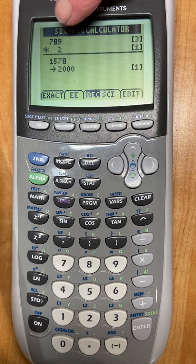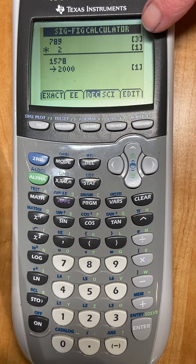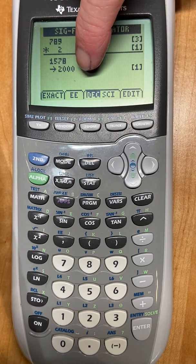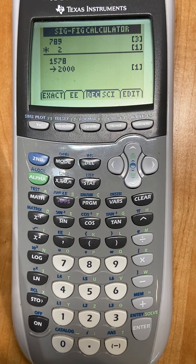Well, this has 3 SIG-FIGs, this has 1, that means you must go with the lowest number of SIG-FIGs. Here's the real answer, or the full answer, but I can only have 1 SIG-FIG so it is rounded to 2,000.